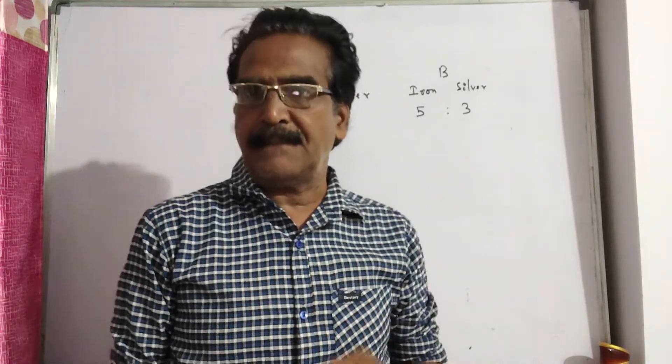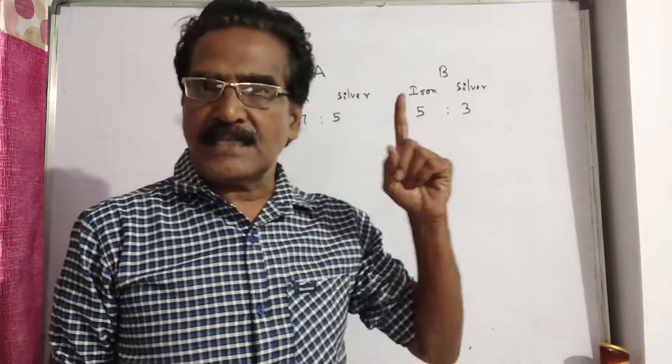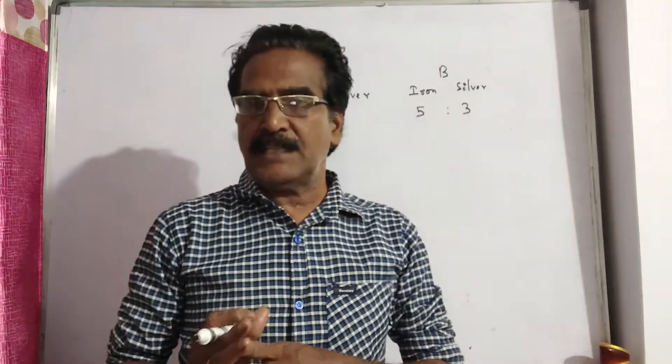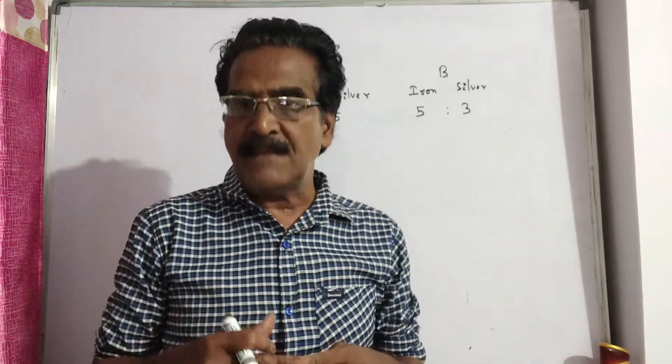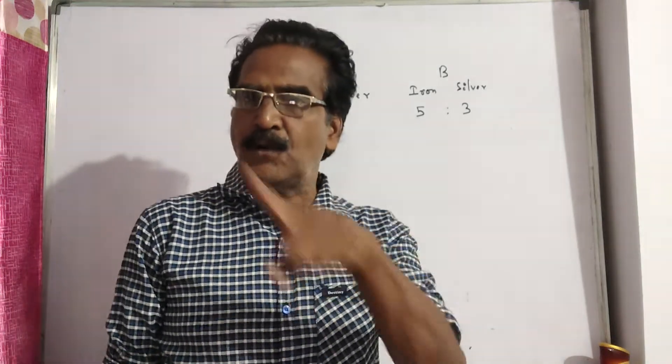Two alloys A and B contain iron and silver in the ratio 7 is to 5 and 5 is to 3. If equal quantities of these two alloys are mixed to form a new alloy C, what is the ratio of iron and silver in the new alloy C?